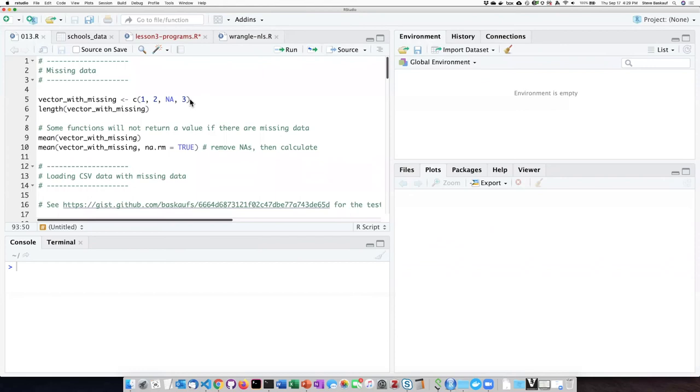Let's try creating this vector and performing the operations that we just saw. Here I'm constructing a vector that includes an NA as one of the values. As I said, this should not be in quotation marks. If we run it, we can see in the global environment that we've created the vector.